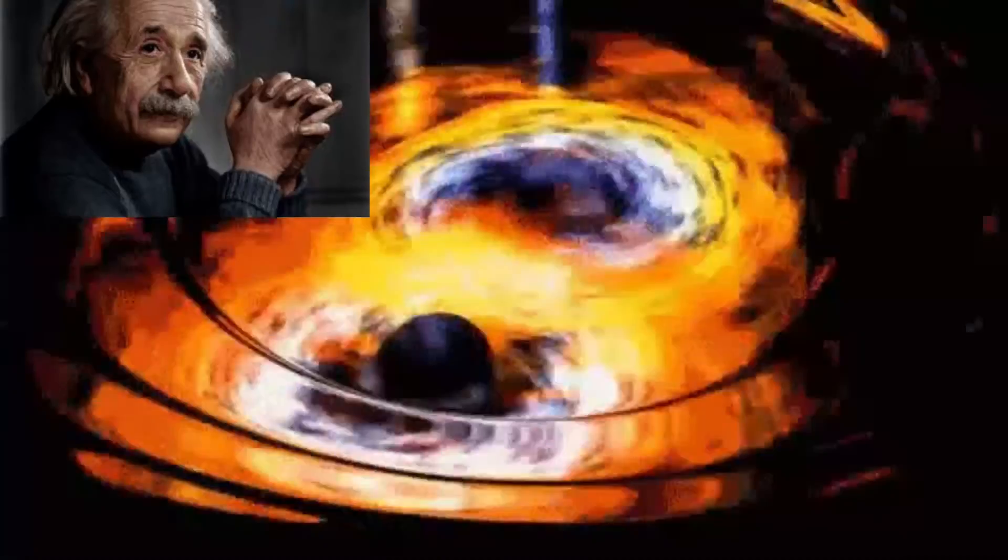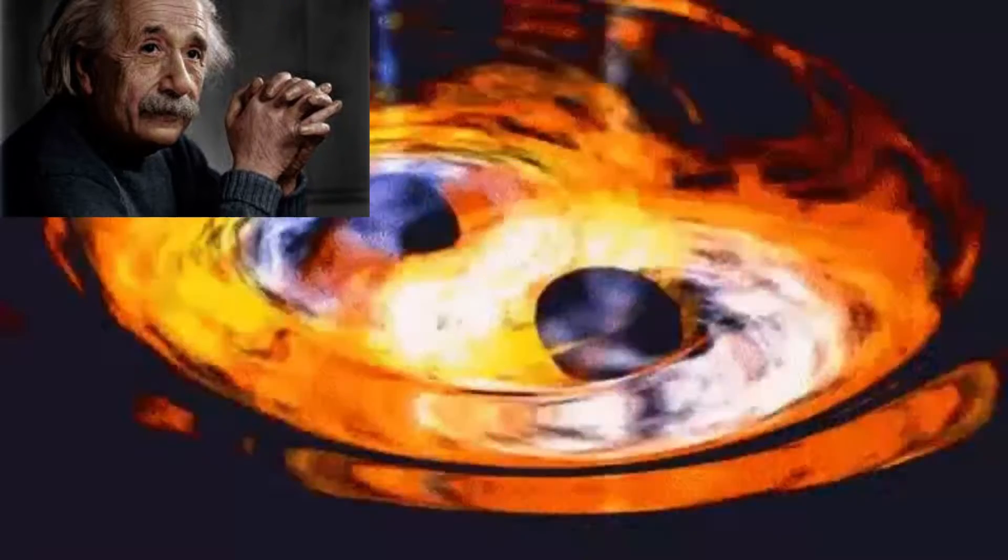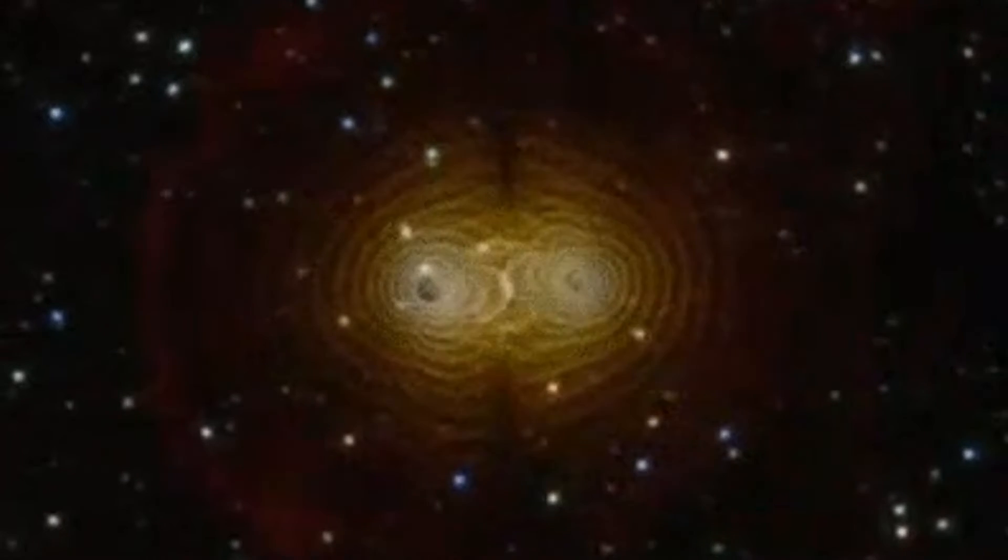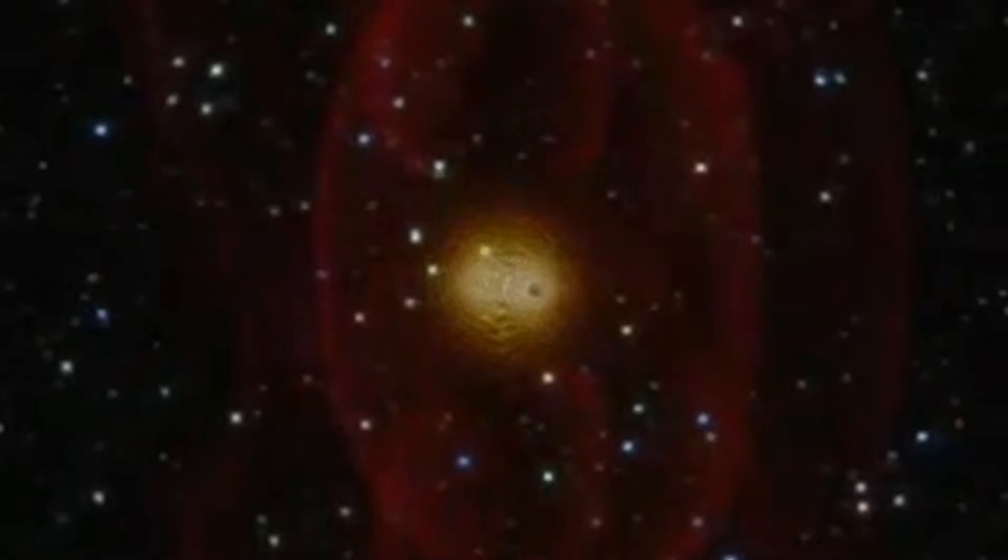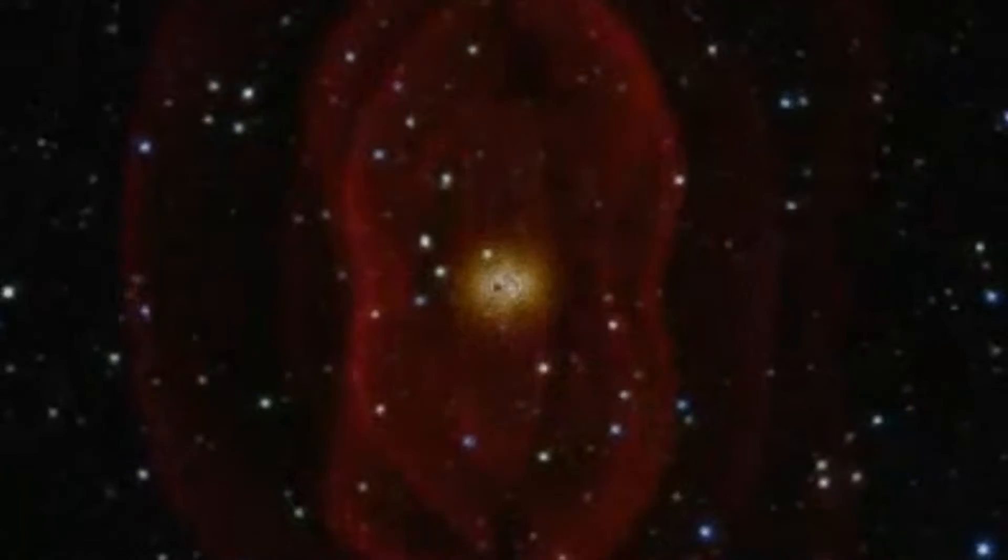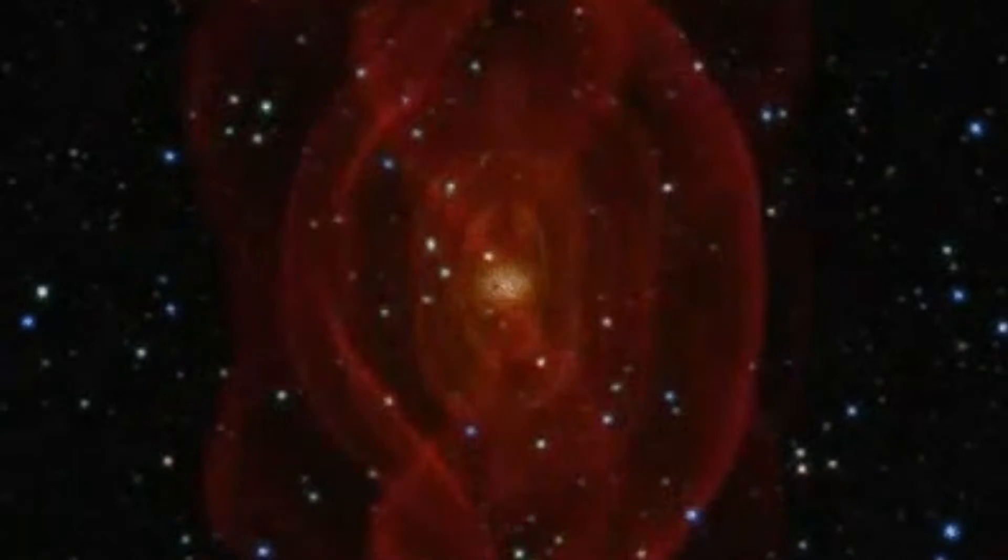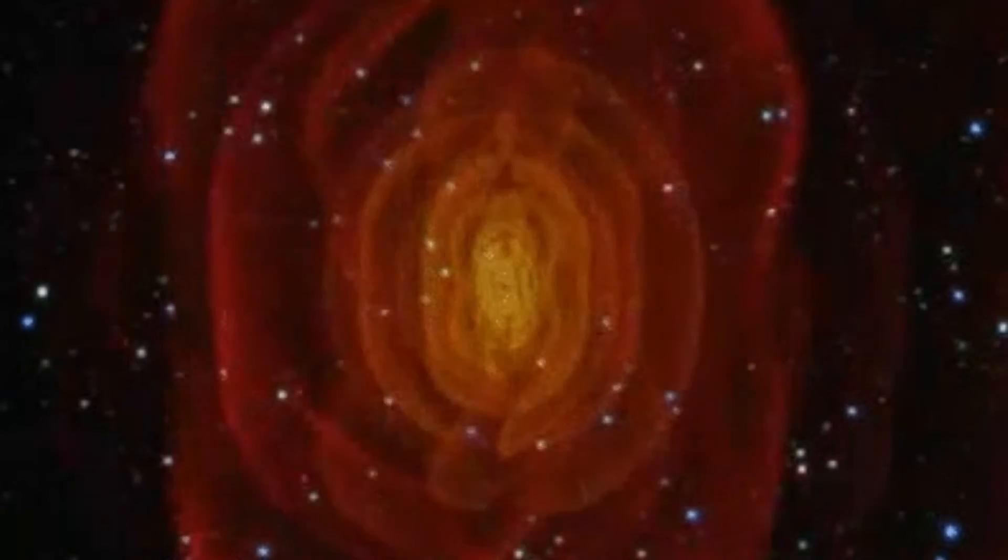Einstein made the gravitational wave prediction in 1916. They were first directly identified in 2015 by the advanced LIGO sensors from the merger of two black holes, a groundbreaking discovery that earned the 2017 Nobel Prize.